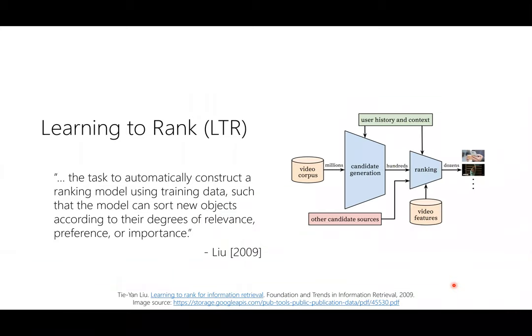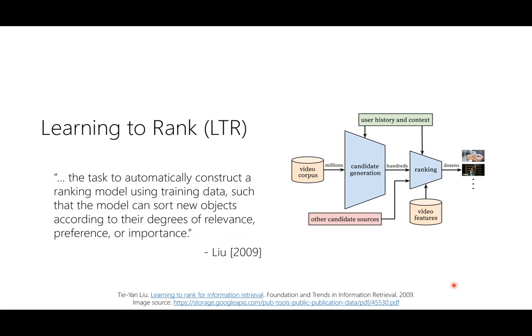So what is learning to rank? Learning to rank assumes you're given a training dataset, and your goal is to automatically construct a ranking model such that, given a new set of user intent and some collection of items, you're able to sort those items based on their degree of relevance or some other preference. For example, in search, you might want to sort documents based on relevance to the query, but also on other factors like document quality and popularity.